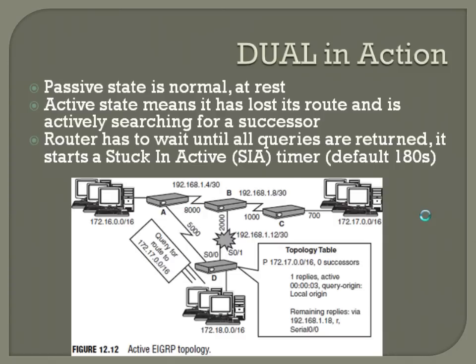DUAL in action. EIGRP being Cisco proprietary is its biggest downfall; the second biggest is the terminology. Successor, feasible successor, advertised distance, feasible distance — all of these get really confusing. Then the active and passive state is also confusing. Passive state is normal or at rest — that means it's good to go, you've got a route in there. Active state means it has lost its successor route and is actively searching for a successor. My natural mindset would assume the opposite — active sounds like it's a good route, but it's completely the opposite. Passive means the DUAL algorithm is not running, so you know it's a good route — you'll see a 'P' in the topology table. Active means it doesn't know the best route and is running DUAL to find one. So passive is good, active is bad.